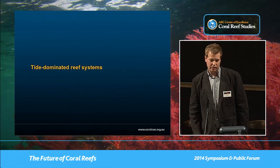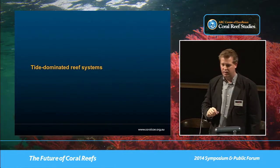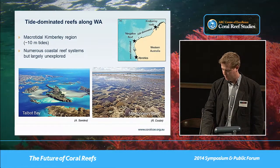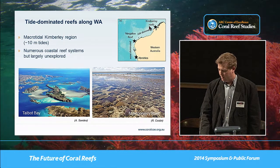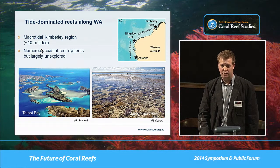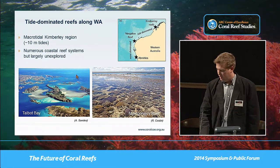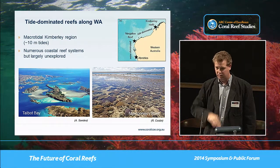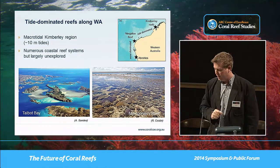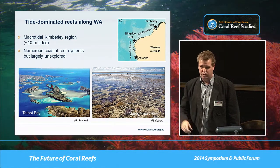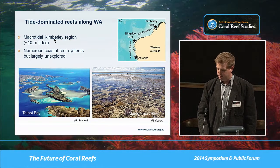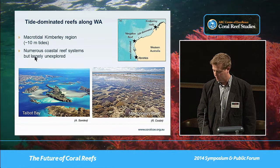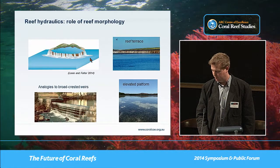Going to the other end of the spectrum — the far northwest of Australia, into the Kimberley. This area has up to 12-meter tides in some areas and numerous coral reef systems often found on intertidal platforms. There's quite a bit of work starting here, but given its remoteness and lack of historical study, it remains largely unexplored.